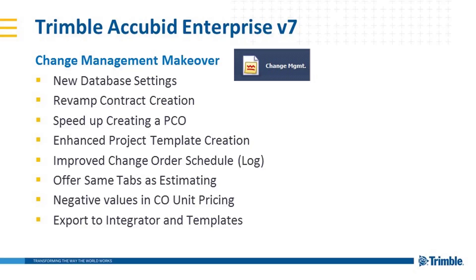We revamped how a contract is created, giving you a little more power there. We decreased the keystrokes needed to create a new PCO, making it a little faster. We've enhanced the flexibility to create the initial project change order template so you can create it faster and with more flexibility. We've improved the change order schedule to show more data for the PM to stay on top of change requests. We now offer the same tabs as estimating — a big one for companies, particularly when estimating large change requests. Negative values are now allowed in unit pricing, and exporting to integrator and templates now works like estimating.